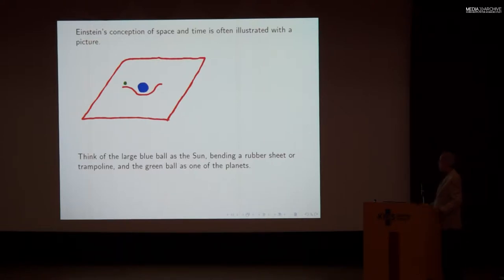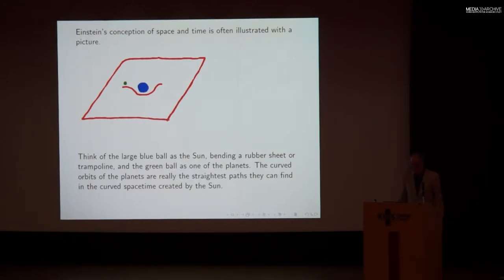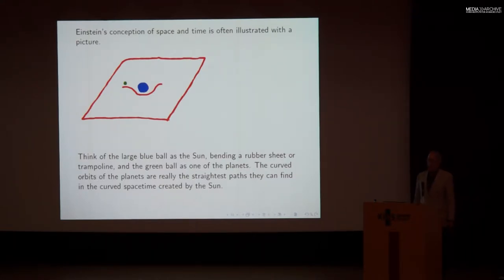The large blue ball represents the sun bending a rubber sheet — or in English, a trampoline — and the green ball is one of the planets. The curved orbits of the planets are really the straightest paths they can find in the curved space-time created by the sun. That's Einstein's theory of gravity in a nutshell, without any equations.